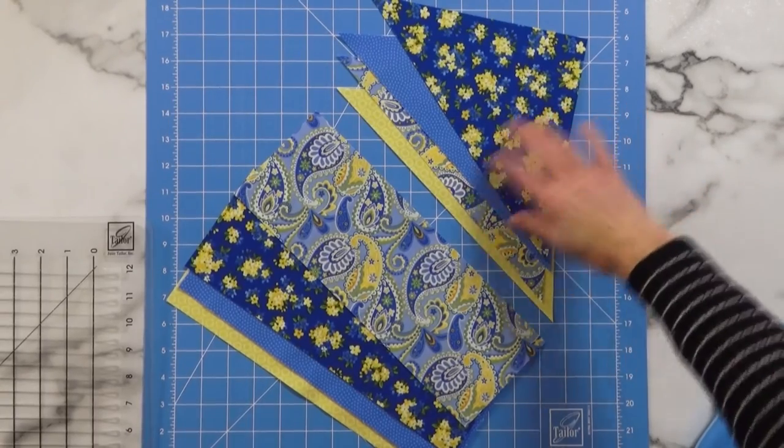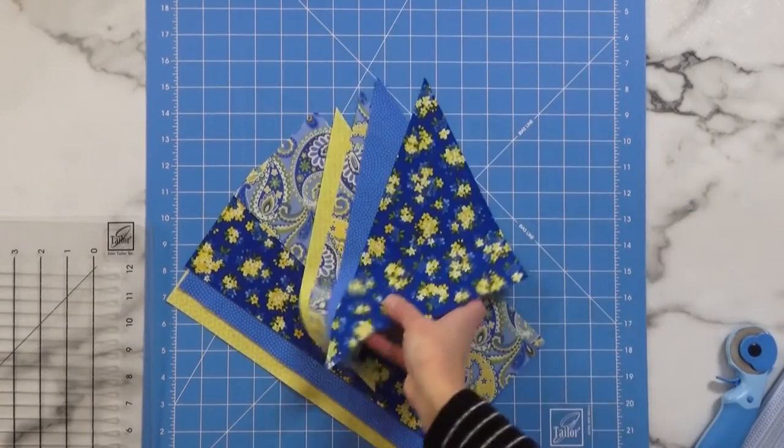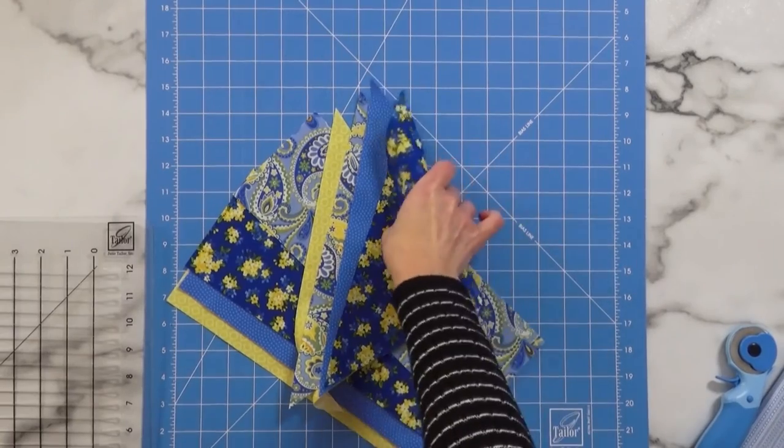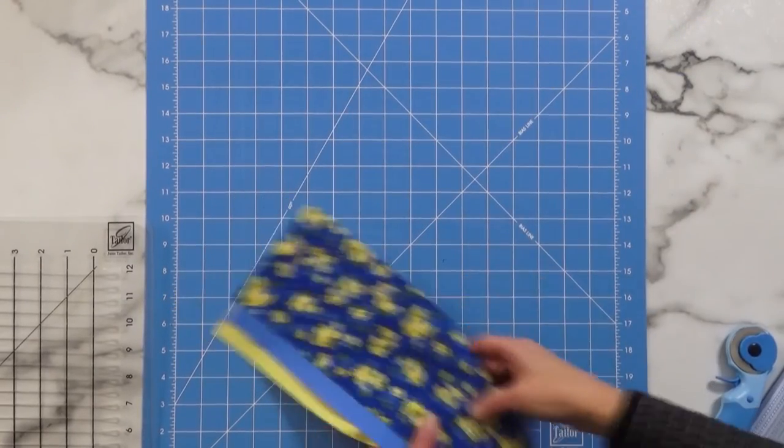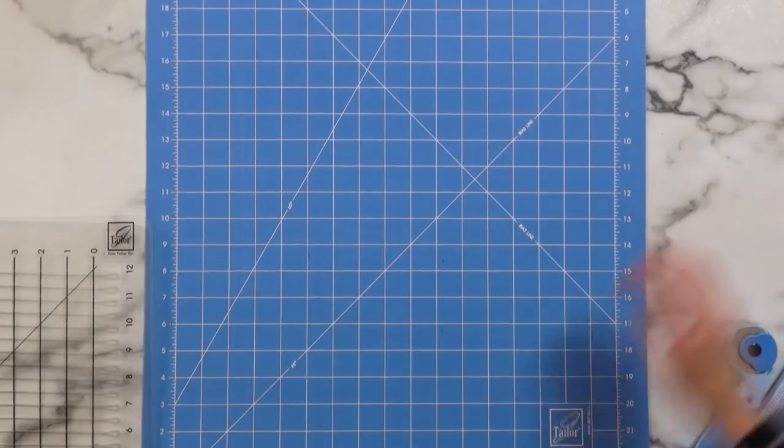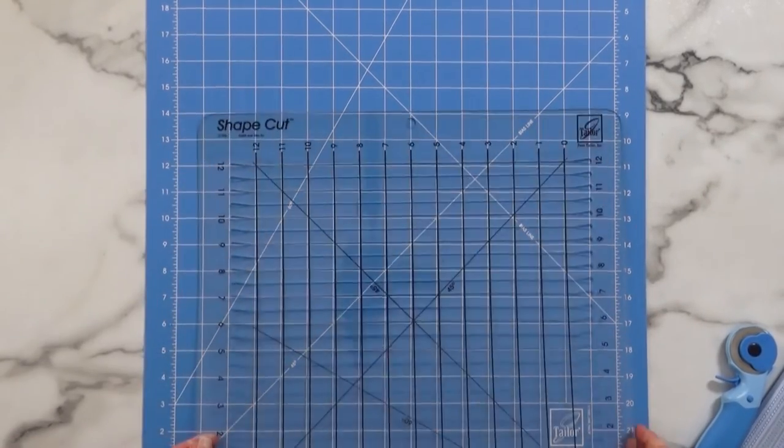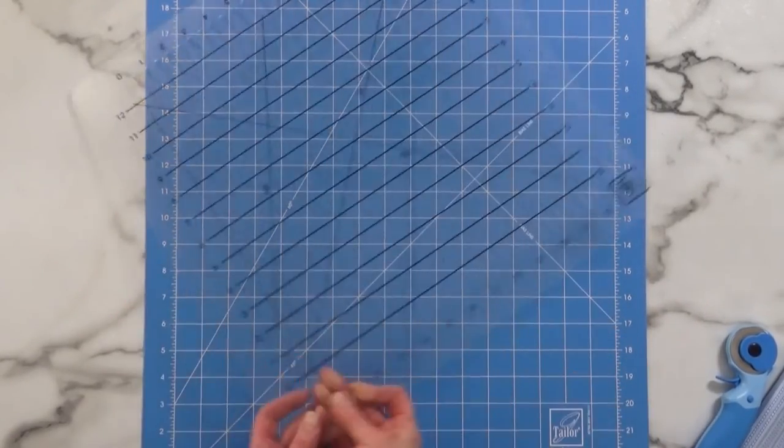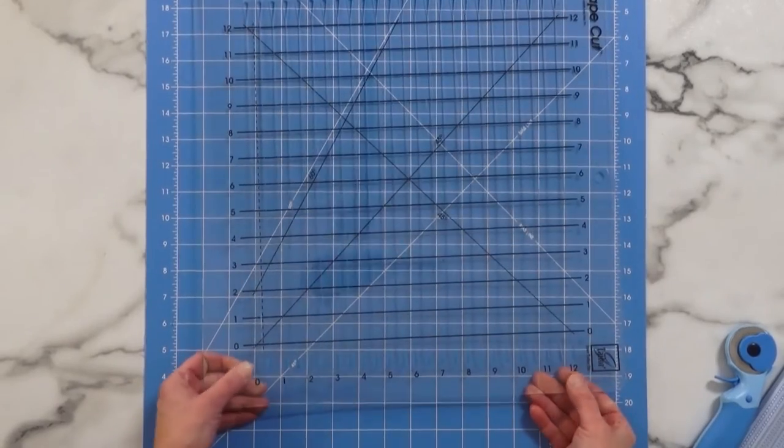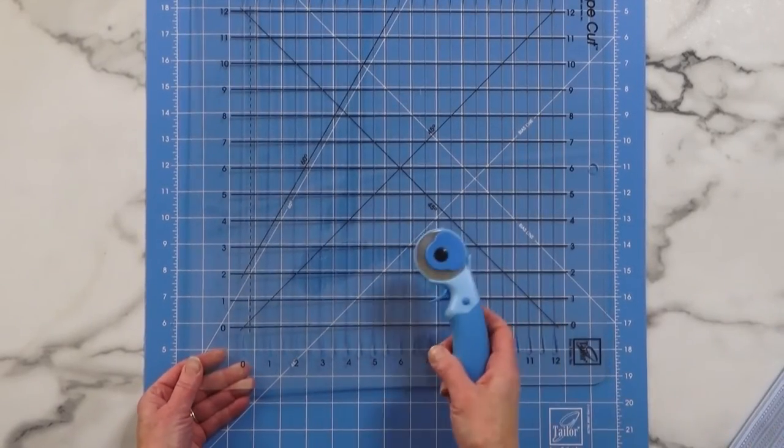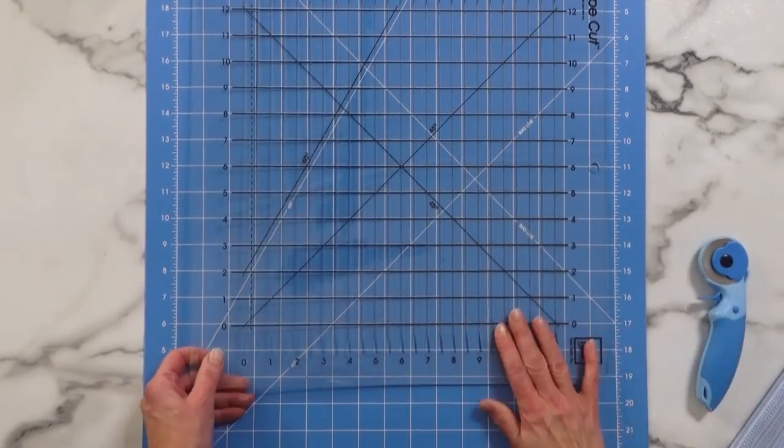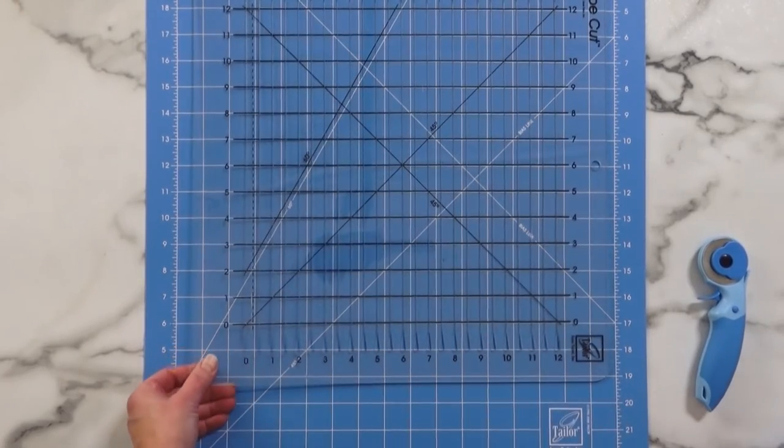The triangles and rectangles for our pillow top have been cut. But I'd like to show you one more cutting method that we like to use. The June Taylor shape cut ruler has slots at half inch increments that accommodate a rotary cutter. This is a great tool to use when doing things like cutting our binding.